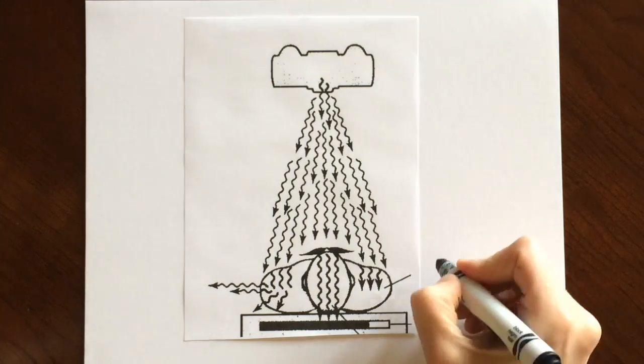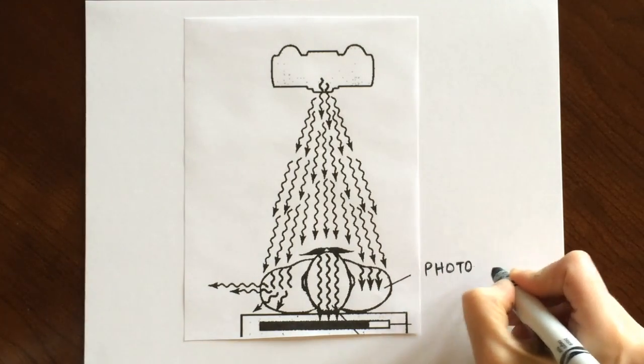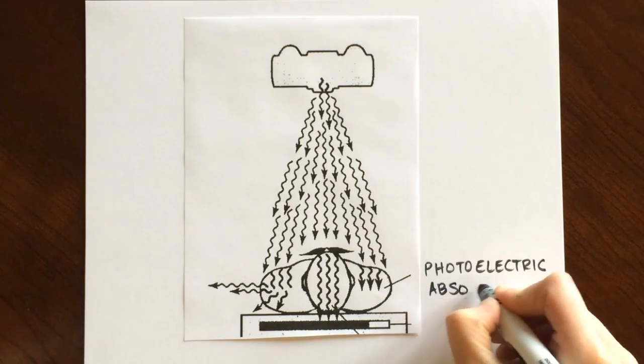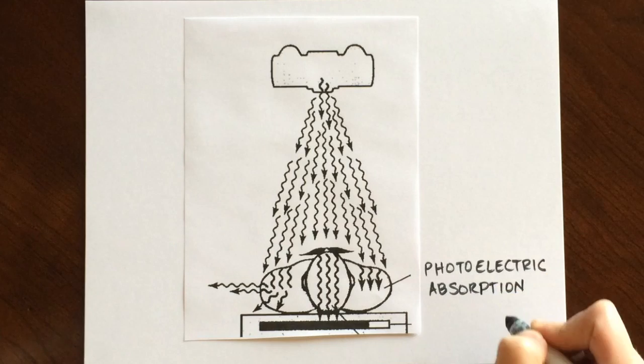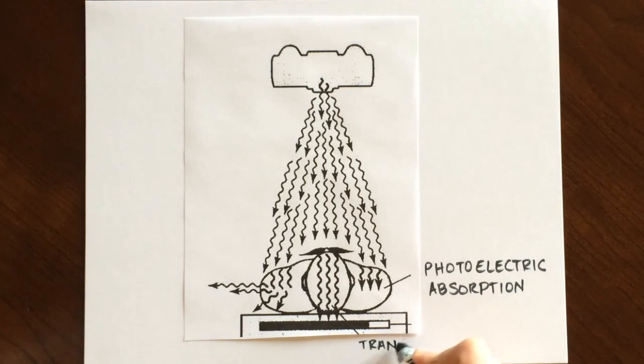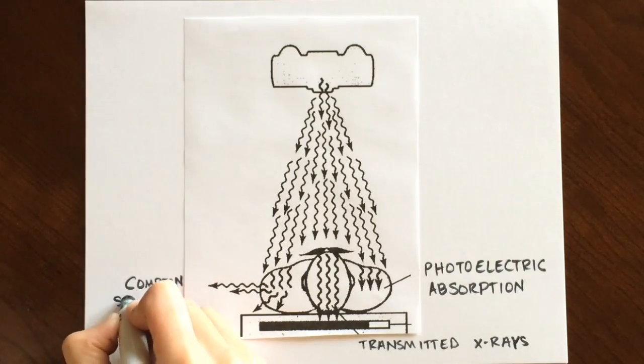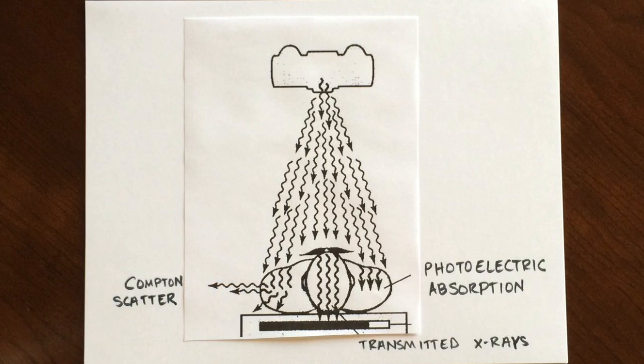Here you can see how these three types of interactions contribute to an x-ray image. Those that are absorbed create white areas on the image. Those that are transmitted through the patient create the dark areas on the image. Those x-rays that are scattered onto the image contain no diagnostic information, but contribute to the film just the same. We use techniques as RTs to reduce this type of x-ray as much as possible.